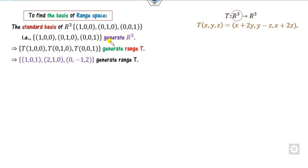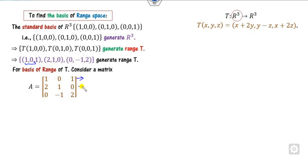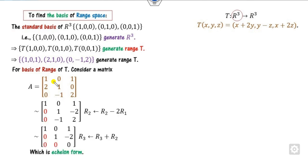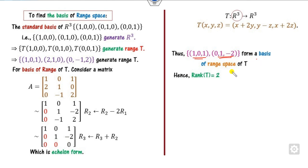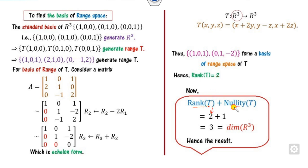We convert the matrix into row echelon form — our target is to make certain elements zero. Operating R2 minus 2R1, then R3 plus R2, we find there are 2 non-zero rows. These form the basis of the range space, which is {(1,0,1), (0,1,-2)}. Since there are 2 basis elements, the rank is 2. Therefore rank + nullity = 2 + 1 = 3, which equals the dimension of R³. The Rank Nullity Theorem is verified.